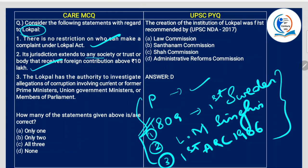The Lokpal has the authority to investigate allegations of corruption involving current or former prime ministers, union government ministers or members of parliament — it leaves nobody behind. So statements one, two and three are all correct. The creation of the institution of Lokpal was first recommended by the Administrative Reforms Commission.